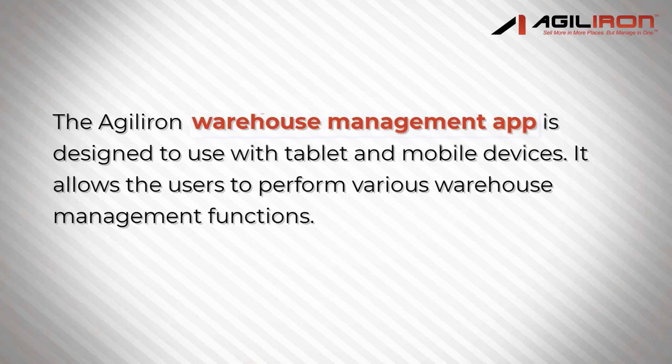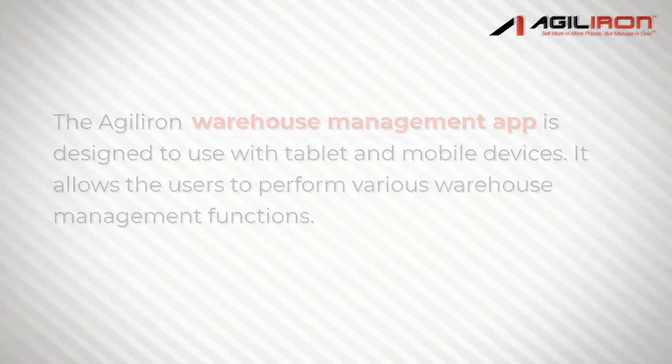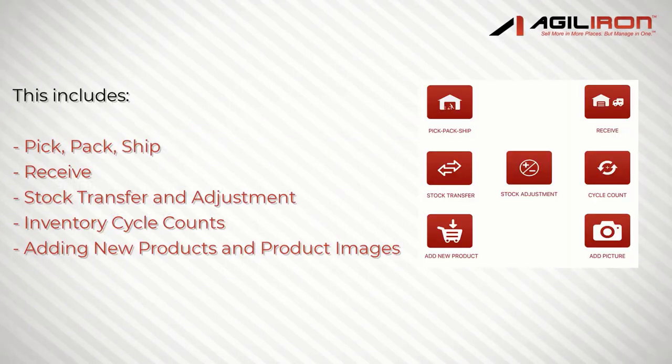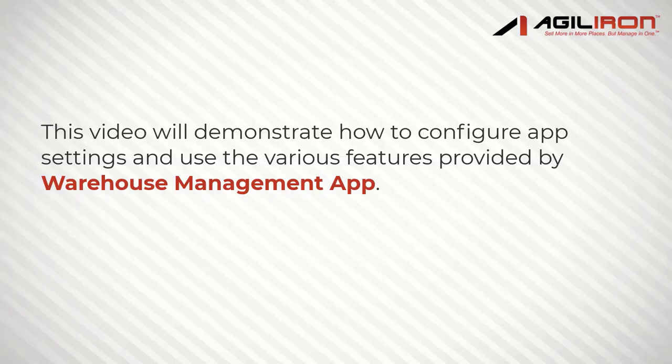AgileIon's Warehouse Management app is designed to be used with a tablet or mobile device. It allows the user to perform warehouse management functions untethered from their computer. The functions include Pick Pack Ship, Receiving, Stock Transfers and Adjustments, Inventory Cycle Counts, and Adding New Products and Product Images. This video will demonstrate how to configure the app settings and use the various features provided in the Warehouse Management app.